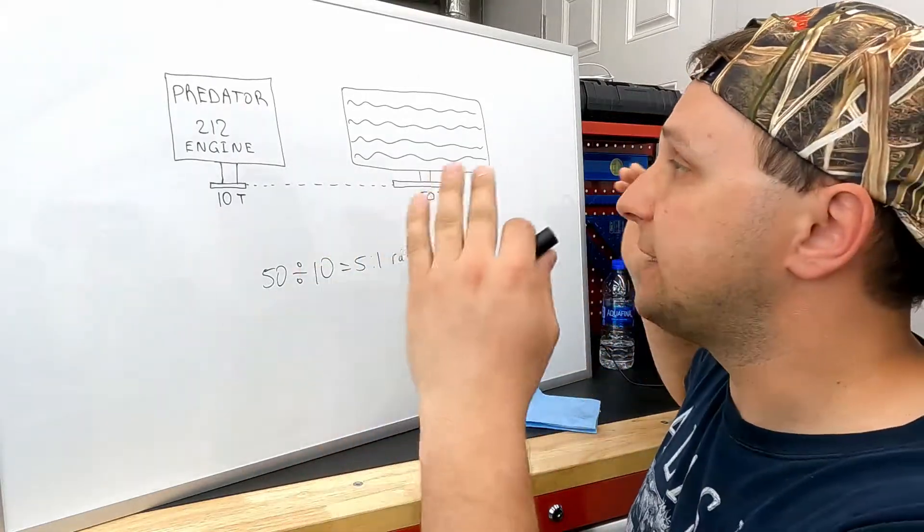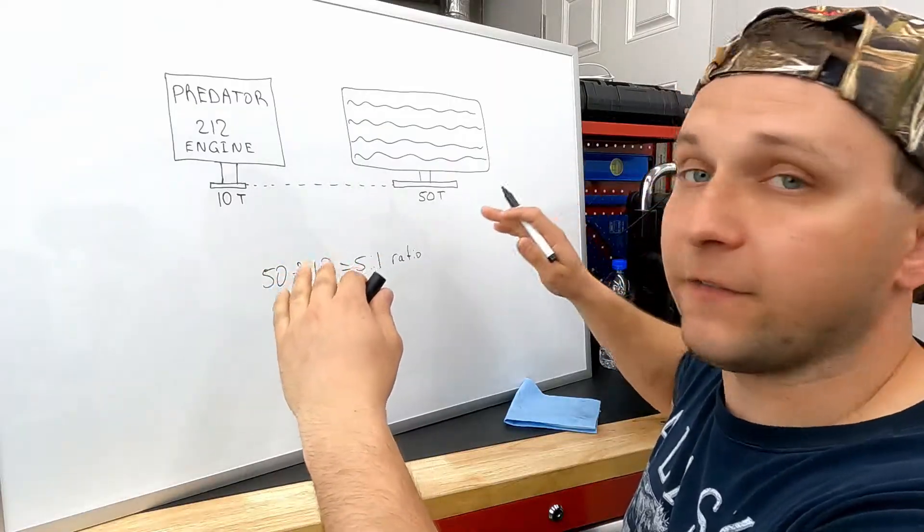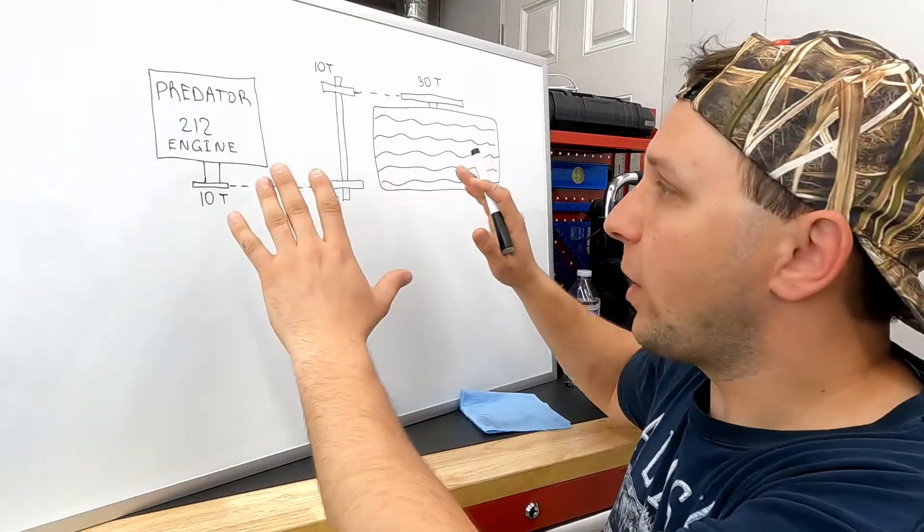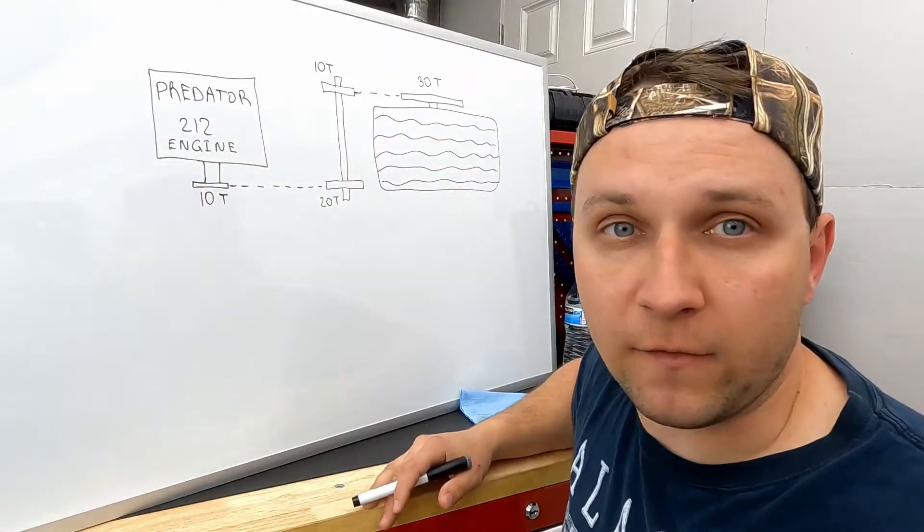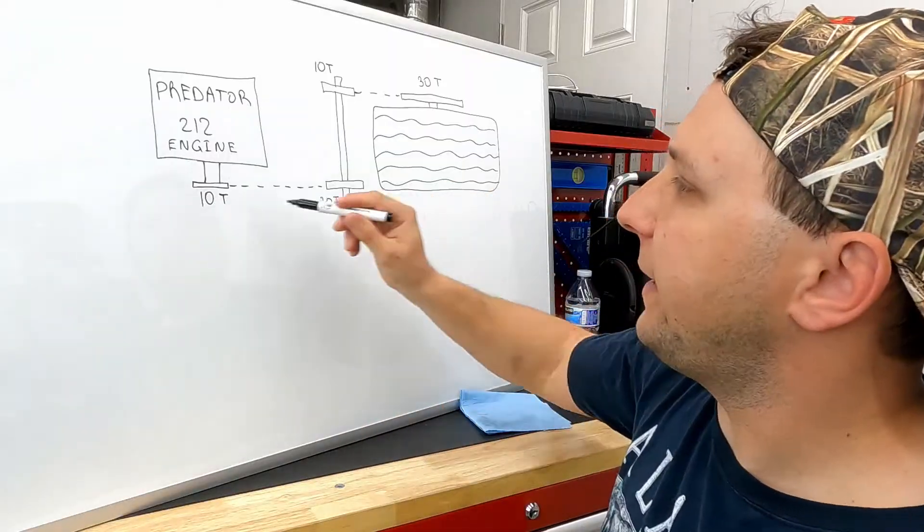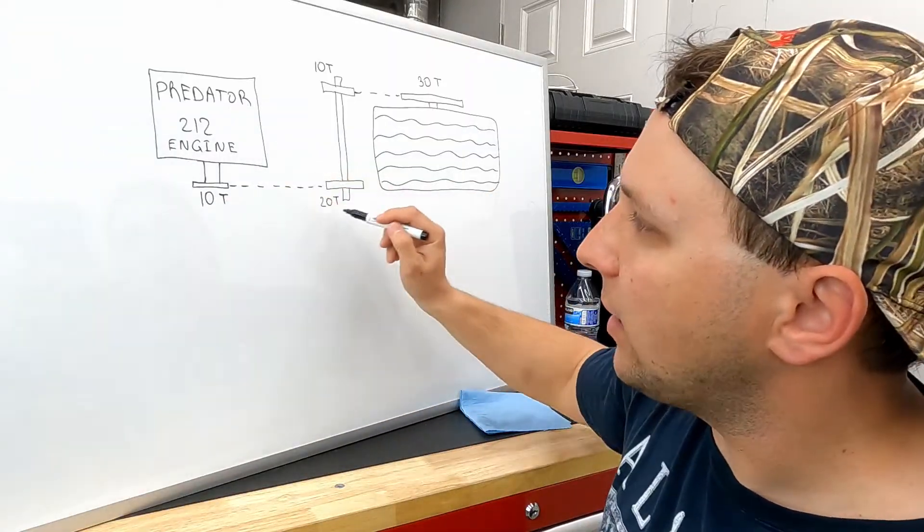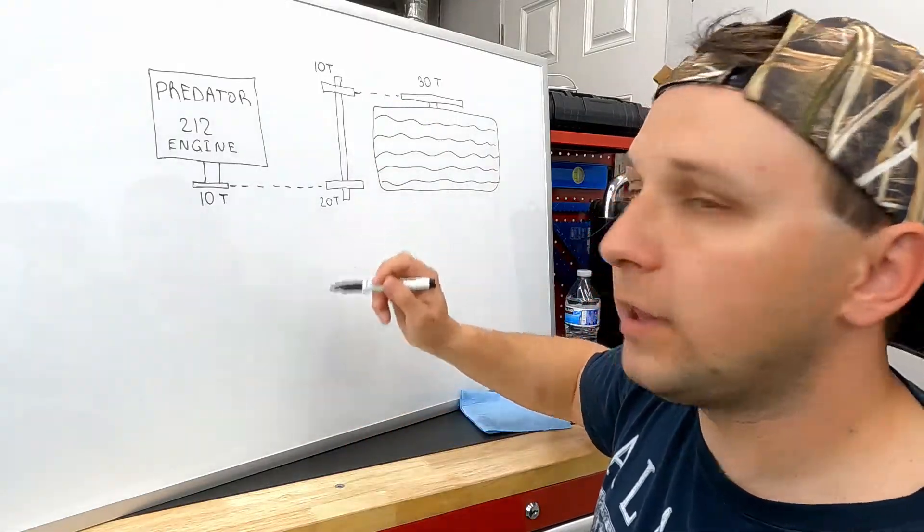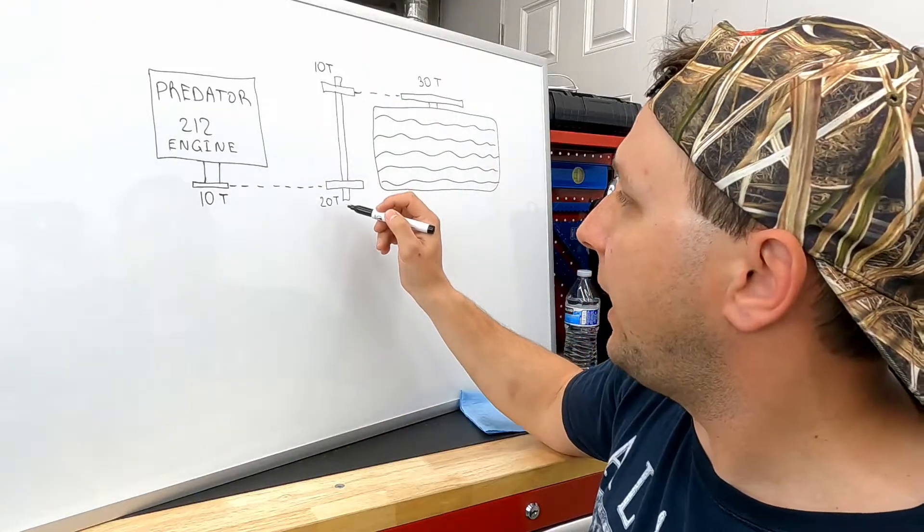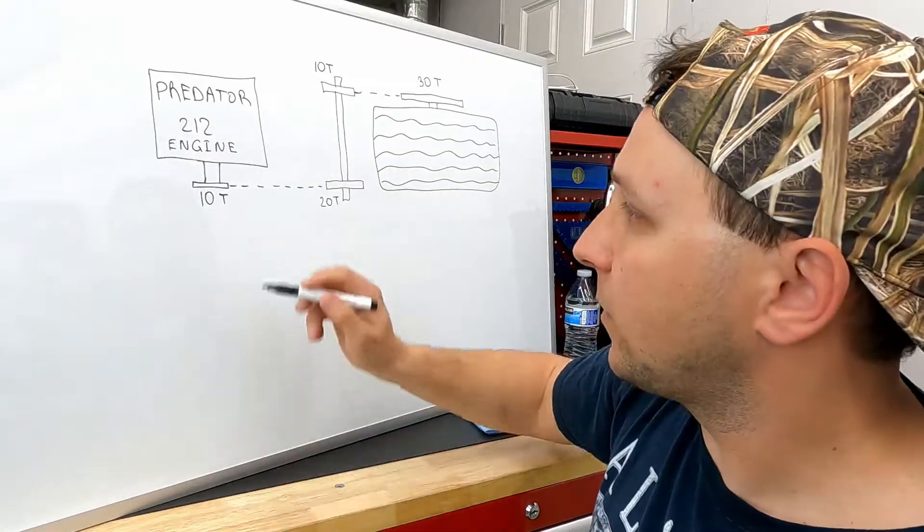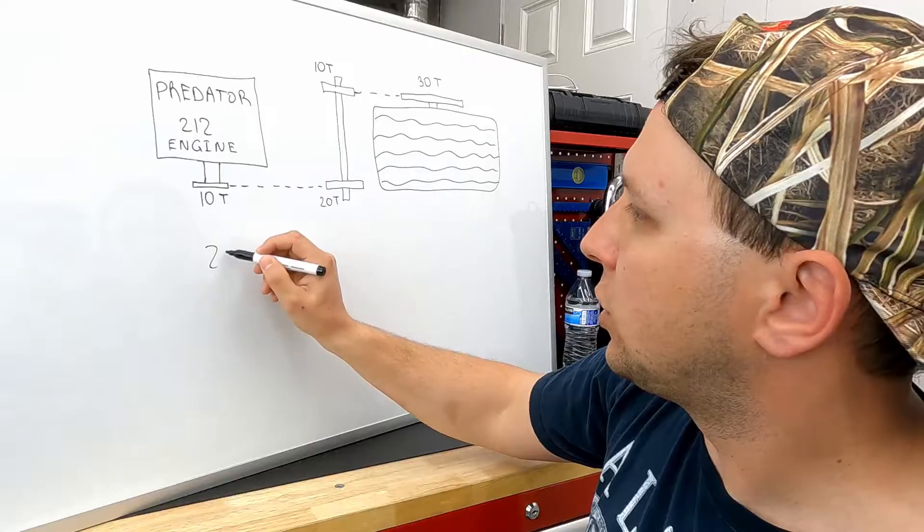That means this setup right here has a 5 to 1 gear ratio. Here we have a setup with a jack shaft. To calculate the gear ratio in this case, we have to find out the gear ratio in this chain link and this chain link as well. So we do it like we did before, we divide the driven sprocket by the drive sprocket. Here we're gonna have 20 divided by 10.